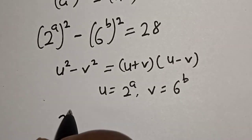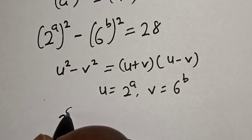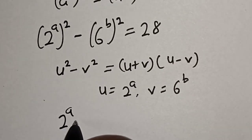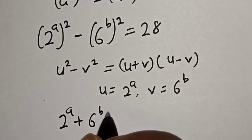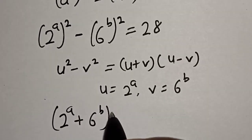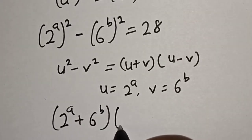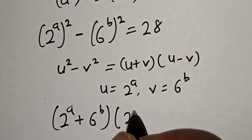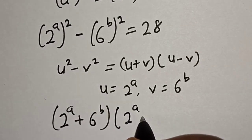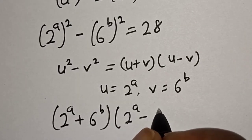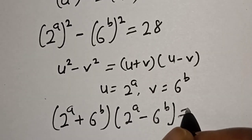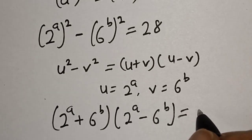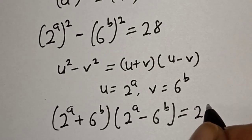Now let's substitute. We have 2 to the power of a plus 6 to the power of b, multiplied by 2 to the power of a minus 6 to the power of b, equals 28.